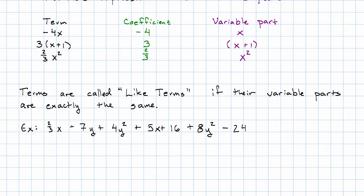Notice I see subtraction that I'm going to rewrite as plus the negative here and also here. I have 1, 2, 3, 4, 5, 6, 7 terms. Of those, 2 thirds x and 5x are like terms. They have exactly the same variable parts. Namely, just x.